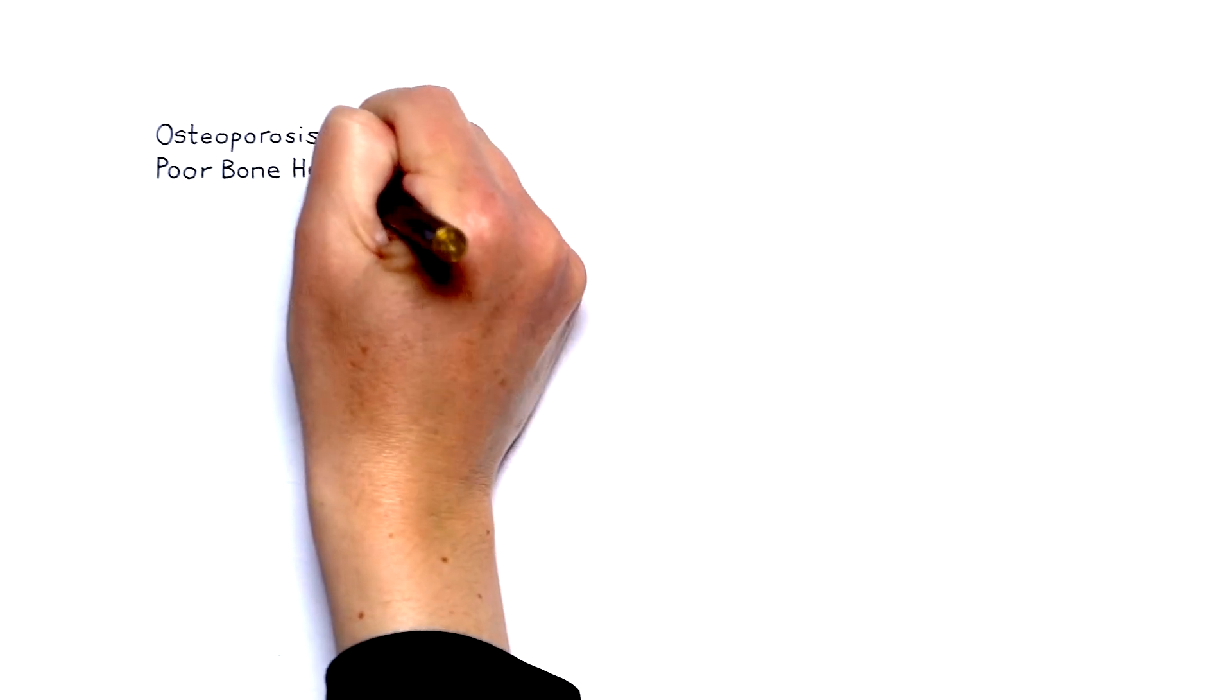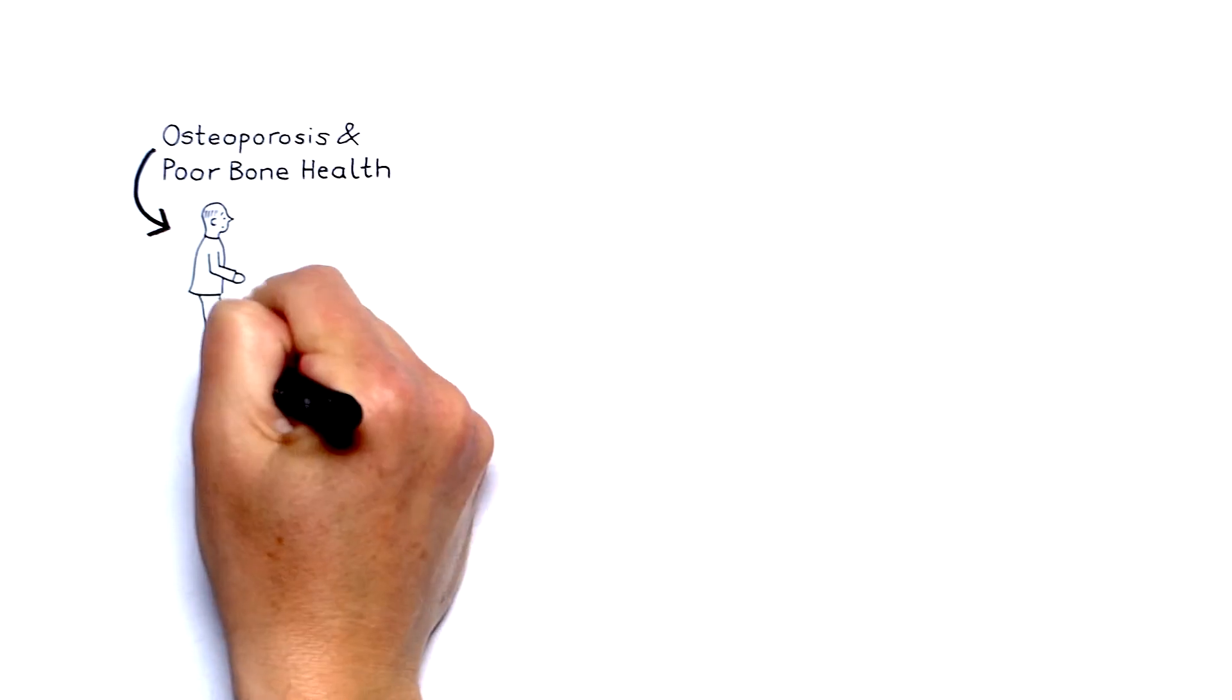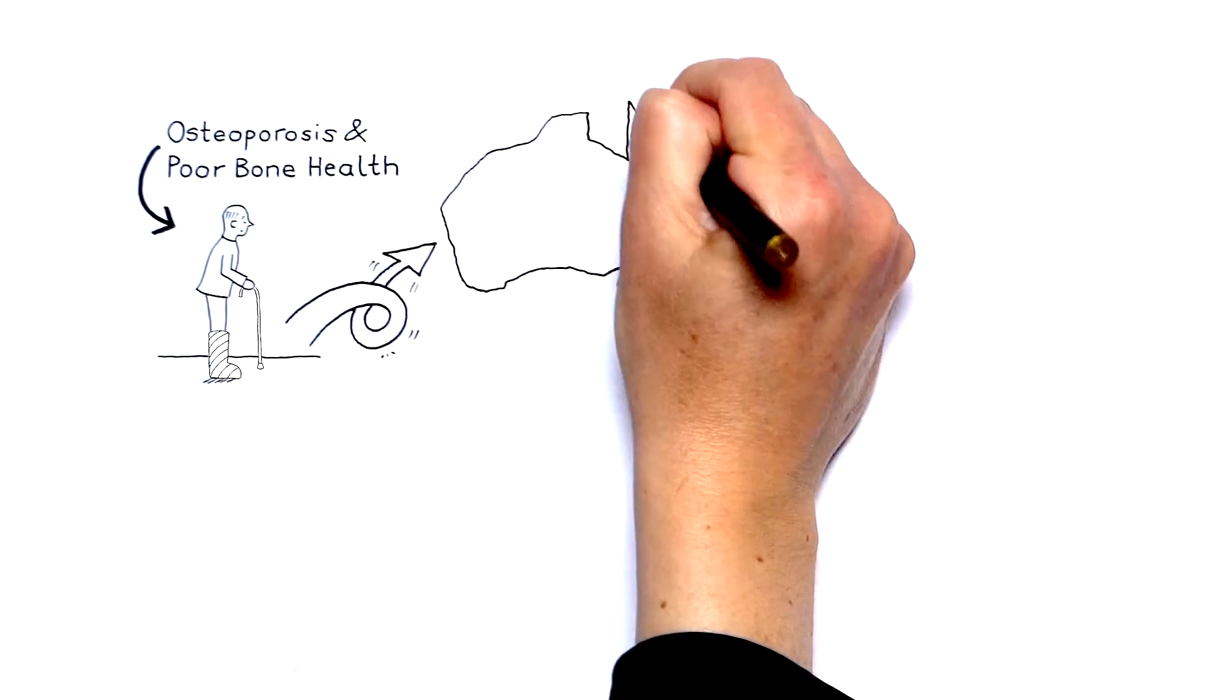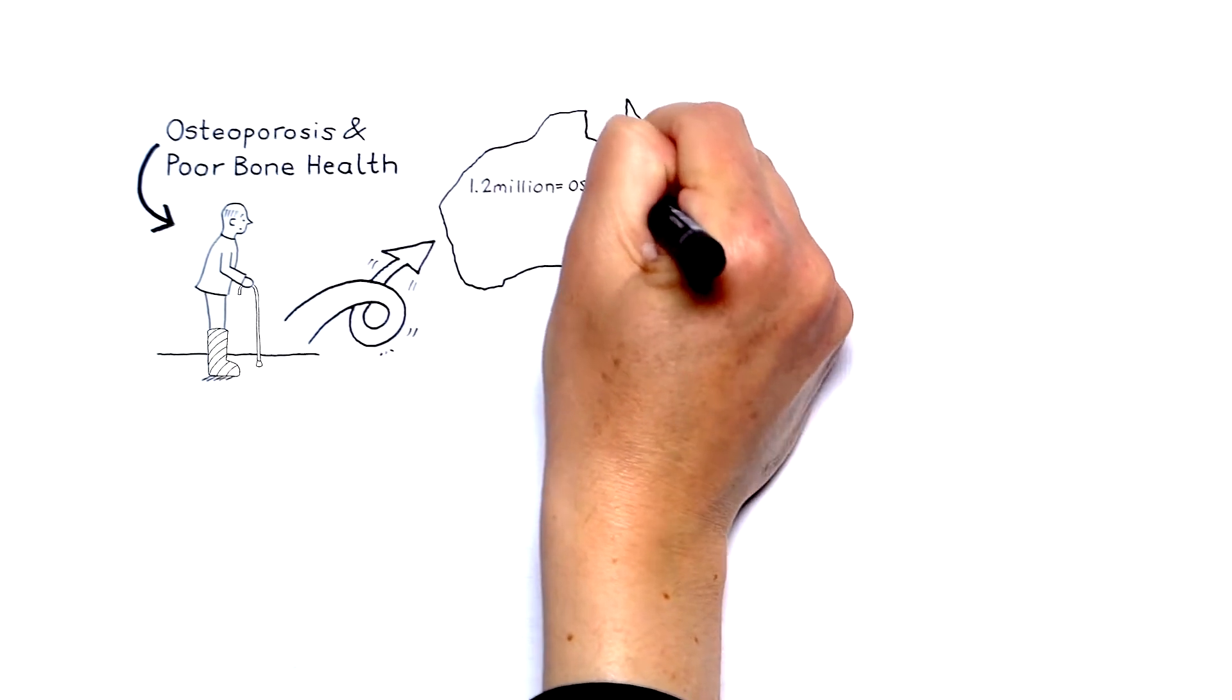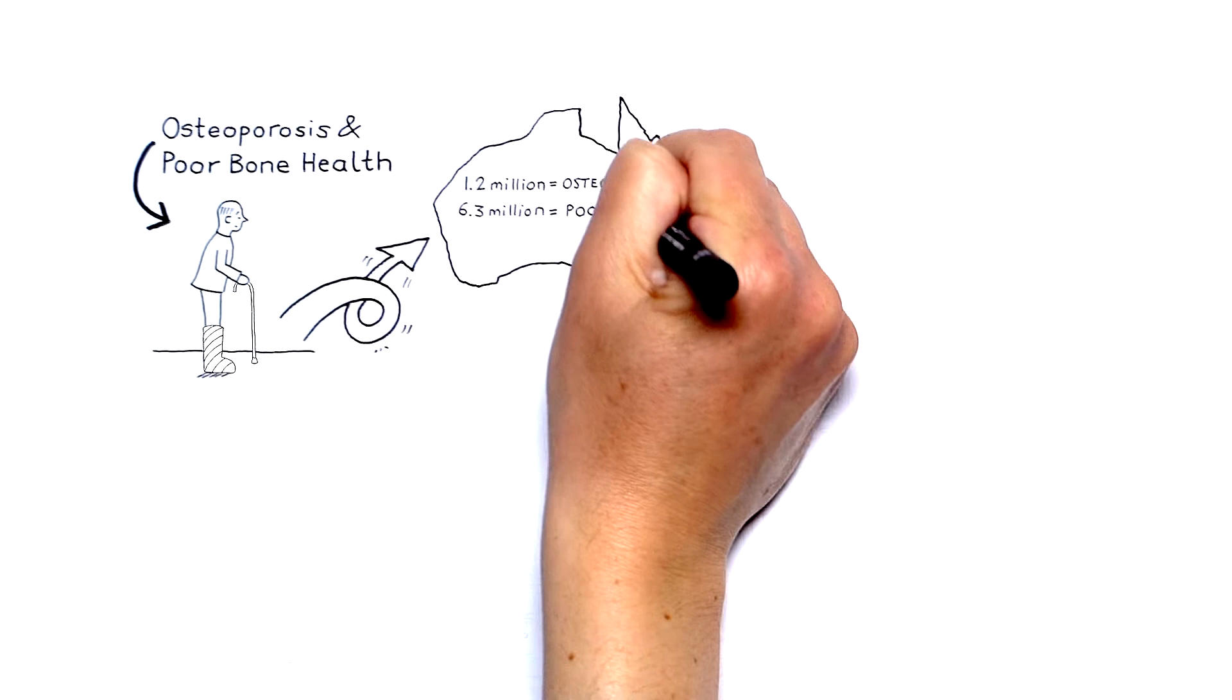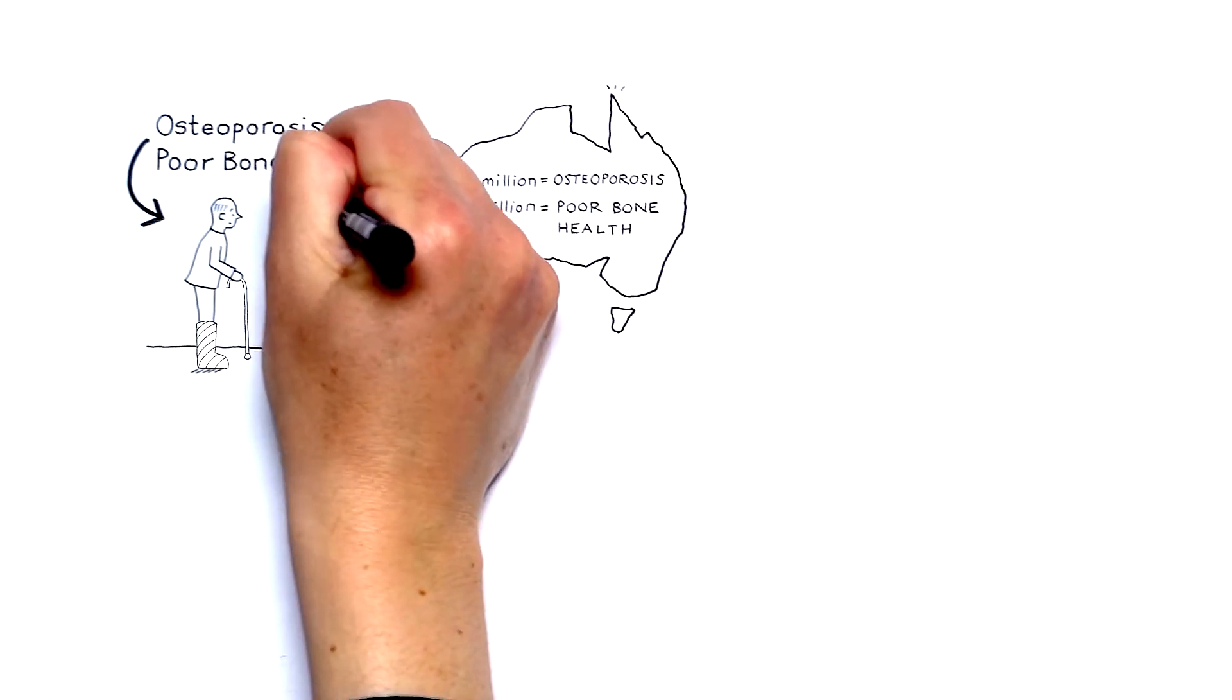Osteoporosis and poor bone health, which can make bones more fragile and susceptible to fracture, are surprisingly common. Around 1.2 million Australians have osteoporosis. Another 6.3 million have poor bone health.